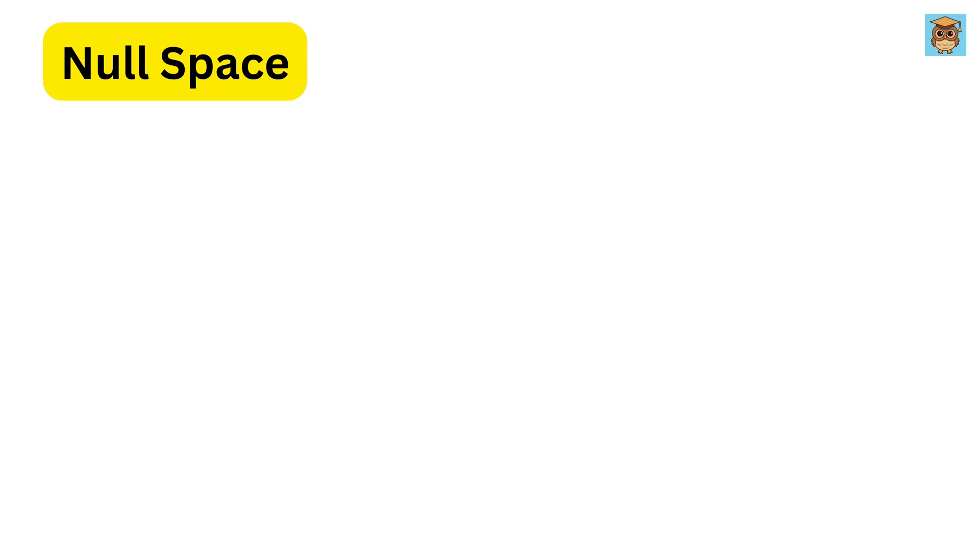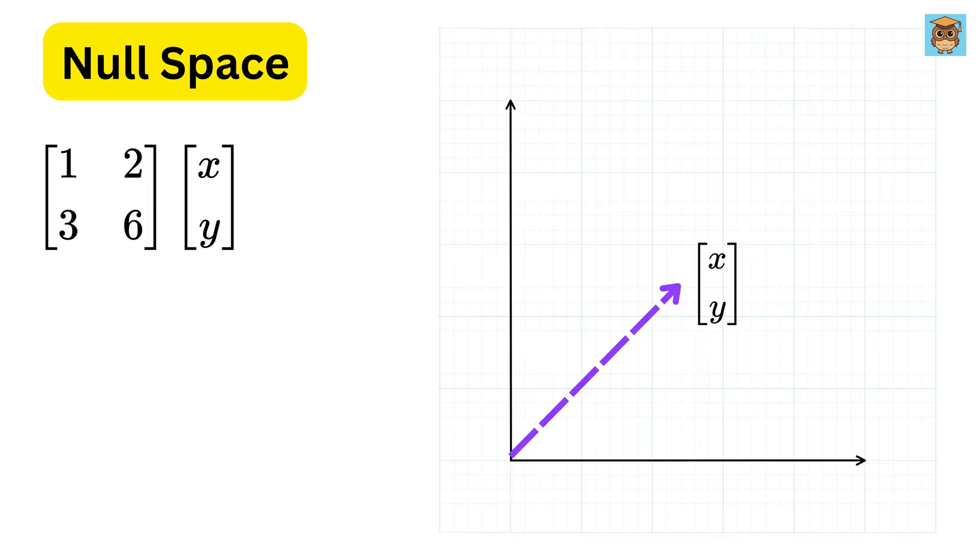Let's talk about the next topic, which is null space of a matrix. Imagine this. You multiply any input vector with this matrix, do all the matrix multiplication, and the result is always just 0, 0, as if nothing happened. That collection of all such input vectors is what we call the null space. So, while column space and rank is all about the output vector, the null space is all about the input vectors that go to 0, 0, or it simply becomes invisible after passing through the matrix.